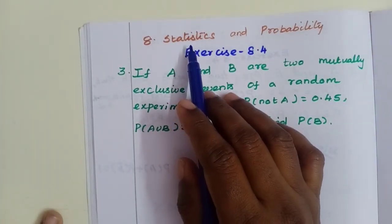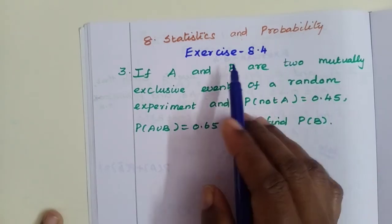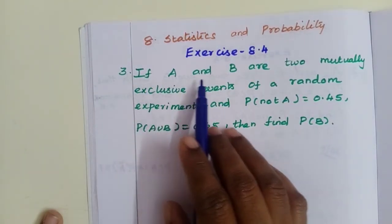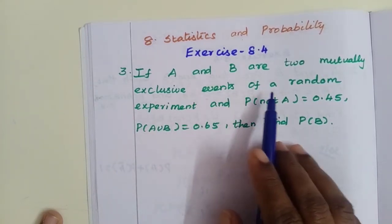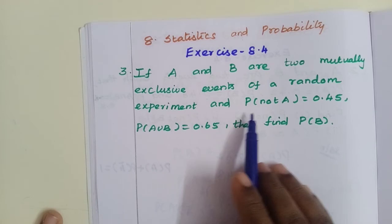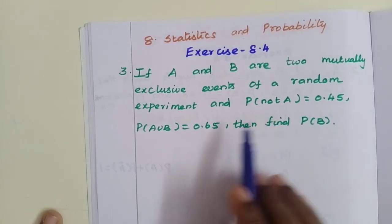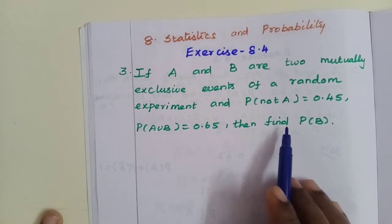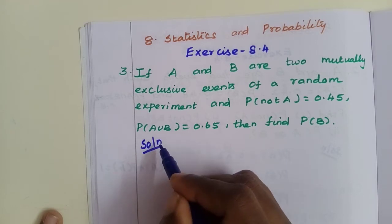Hello students, welcome to Max Class. In this video lesson 8 Statistics and Probability Exercise 8.4, third problem: If A and B are two mutually exclusive events of a random experiment and P(not A) equals 0.45, P(A union B) equals 0.65, then find P(B).